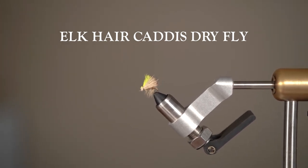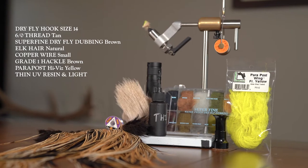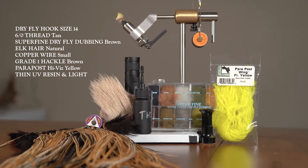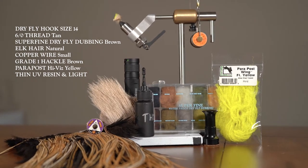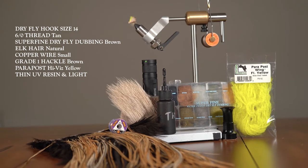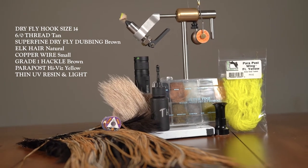To tie this fly you will need a size 14 dry fly hook, 6 oz tan thread, brown superfine dry fly dubbing, a patch of natural colored elk hair, small copper wire, brown grade one hackle, yellow para post, and a thin UV resin with a UV light. I will leave a link to each of these materials in the description below.